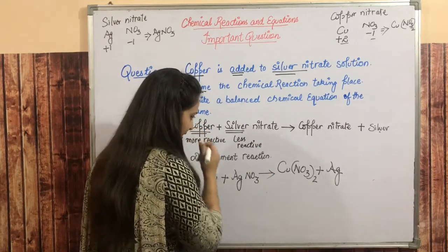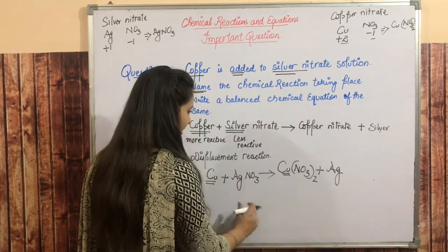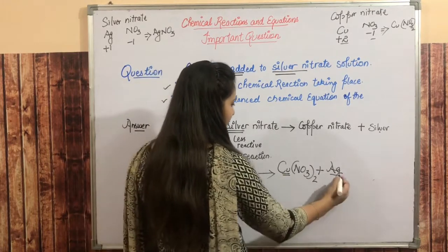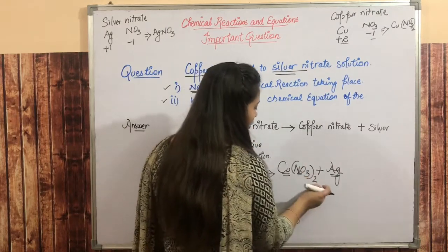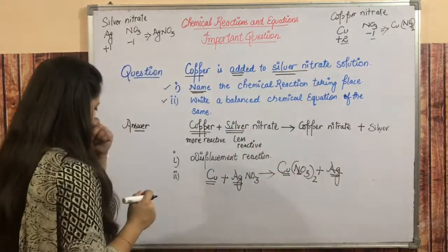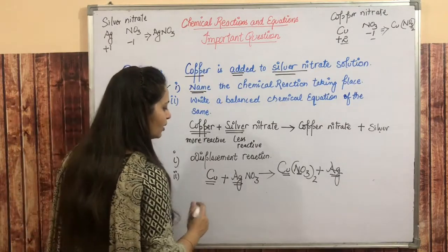Balancing: see what is copper? One copper here. Silver is one there, silver also one. But NO3 is two times, right?